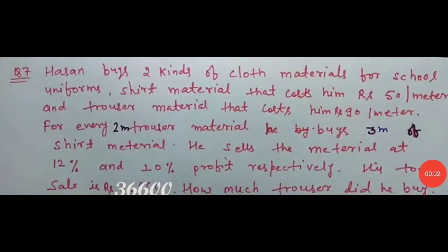Hello students, today we will start question number 7, exercise 2.4. Hassan buys two kinds of cloth materials for school uniforms: shirt material that costs him rupees 50 per meter, and trouser material that costs him rupees 90 per meter. For every 2 meters of trouser material he buys, he buys 3 meters of shirt material.